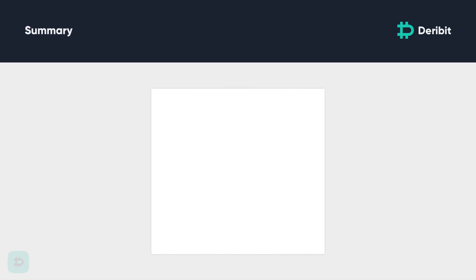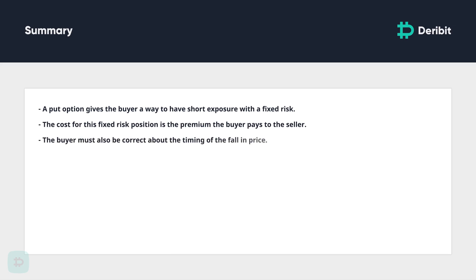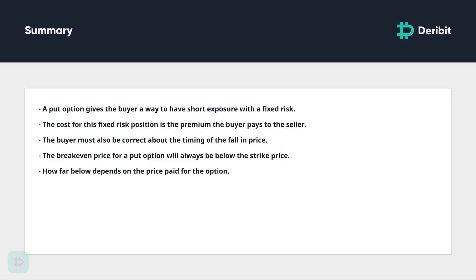In summary, a put option gives the buyer a way to have short exposure to the price of an asset with a fixed risk. The cost for this fixed risk position is the premium the buyer pays the seller. The buyer must also be correct about the timing of the fall in price. Finally, the breakeven price for a put option will always be below the strike price — how far below depends on the price paid for the option. This was a brief summary on put options available at Deribit. Thank you very much for watching.